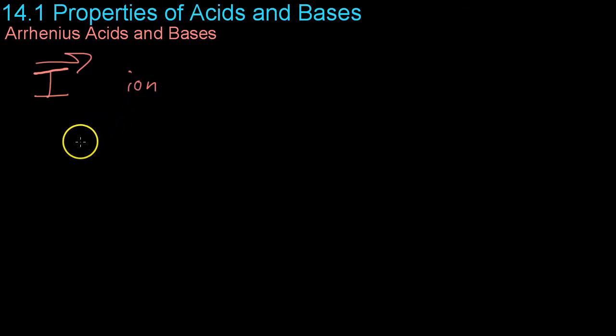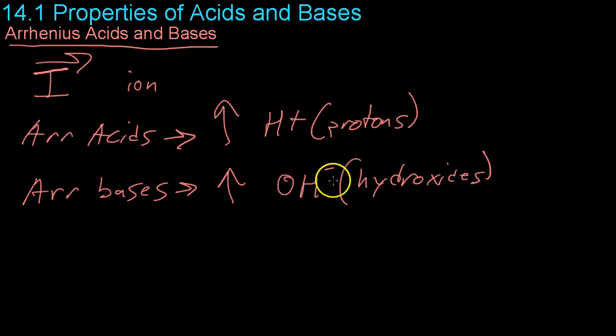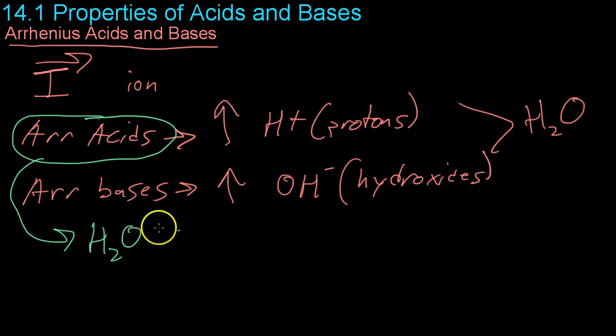Thus we have Arrhenius acids and Arrhenius bases. So Arrhenius acids when they are put into solution increase the concentration of H+ ions that is just free protons within a solution. Arrhenius bases on the other hand increase the concentration of OH- ions. These are also known as hydroxide ions because they're part of a polyatomic ion known as hydroxide. And if you're pretty quick you'll notice that when you combine an H+ and an OH- you get a neutral H2O molecule that is these are the constituent parts of water. Now all of these Arrhenius bases are ionizable that is when they are dissolved into a solution of H2O and they become aqueous then they are able to lose their H+ ion and dissolve it into the solution.